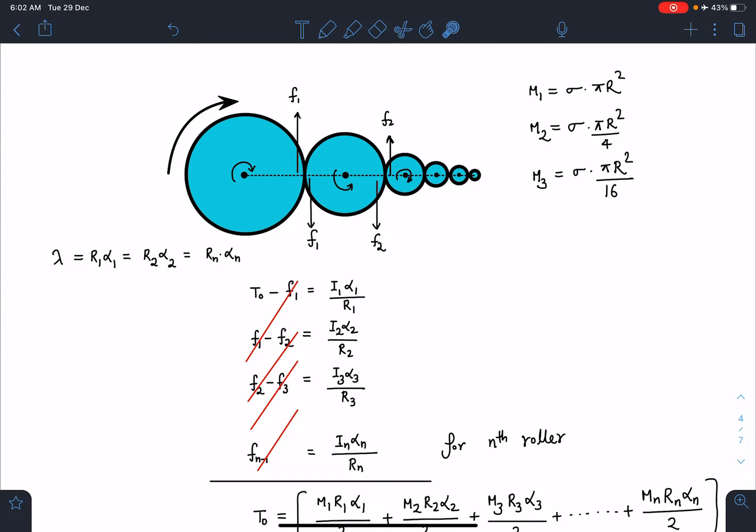When we apply this external torque, the first roller rotates clockwise. Due to no slipping, the next one rotates anti-clockwise, and this pattern continues. Adjacent rollers will have opposite ω. I can write their masses as m₁ = σπR², m₂ = σπ(R/2)², m₃ = σπ(R/4)², and so on till infinity for the nth roller where n tends to infinity.